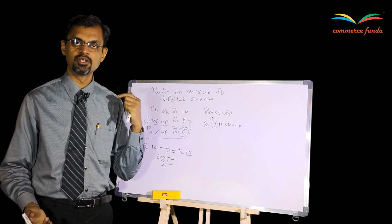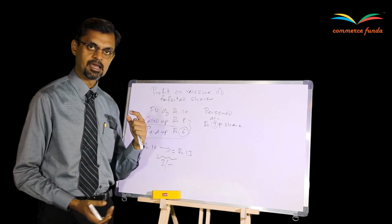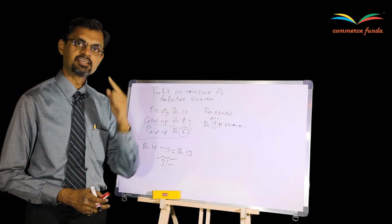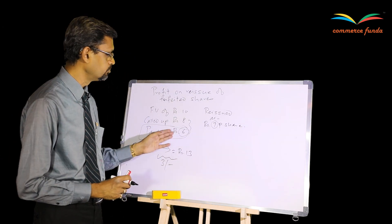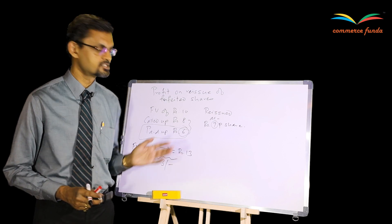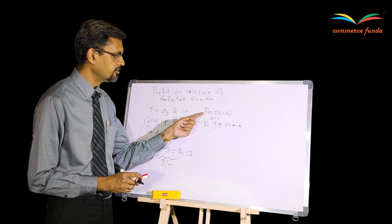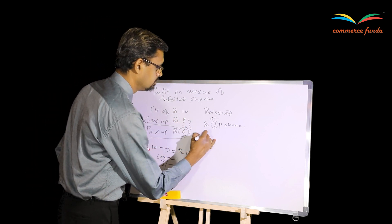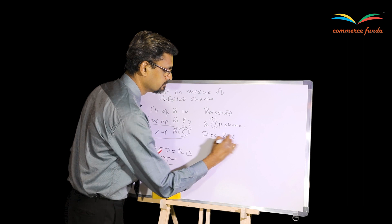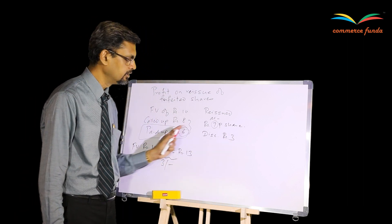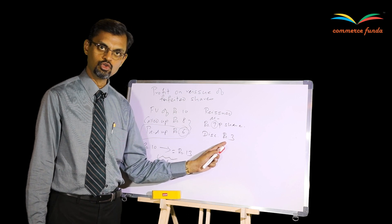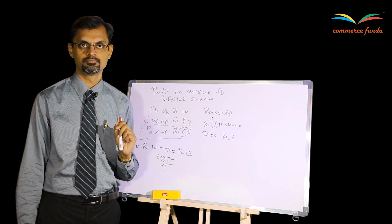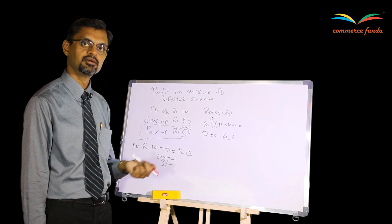That is where profit on reissue comes into the picture. The company had originally retained Rs.6, so ideally when reissuing this share it should pass on the entire Rs.6 as a discount. But since the face value is Rs.10 and the company reissued at Rs.7, it passed on only Rs.3 discount — not Rs.6. The remaining Rs.3 the company kept, and that is the profit. This is how and why profit arises in the case of reissue of forfeited shares.